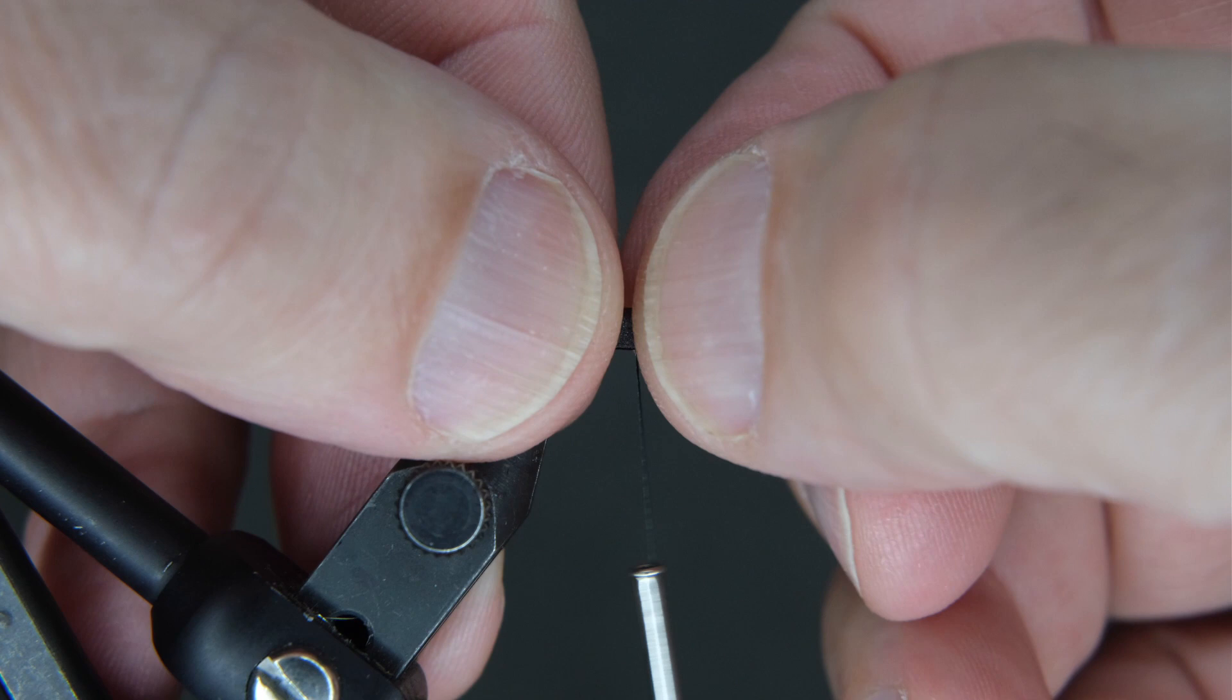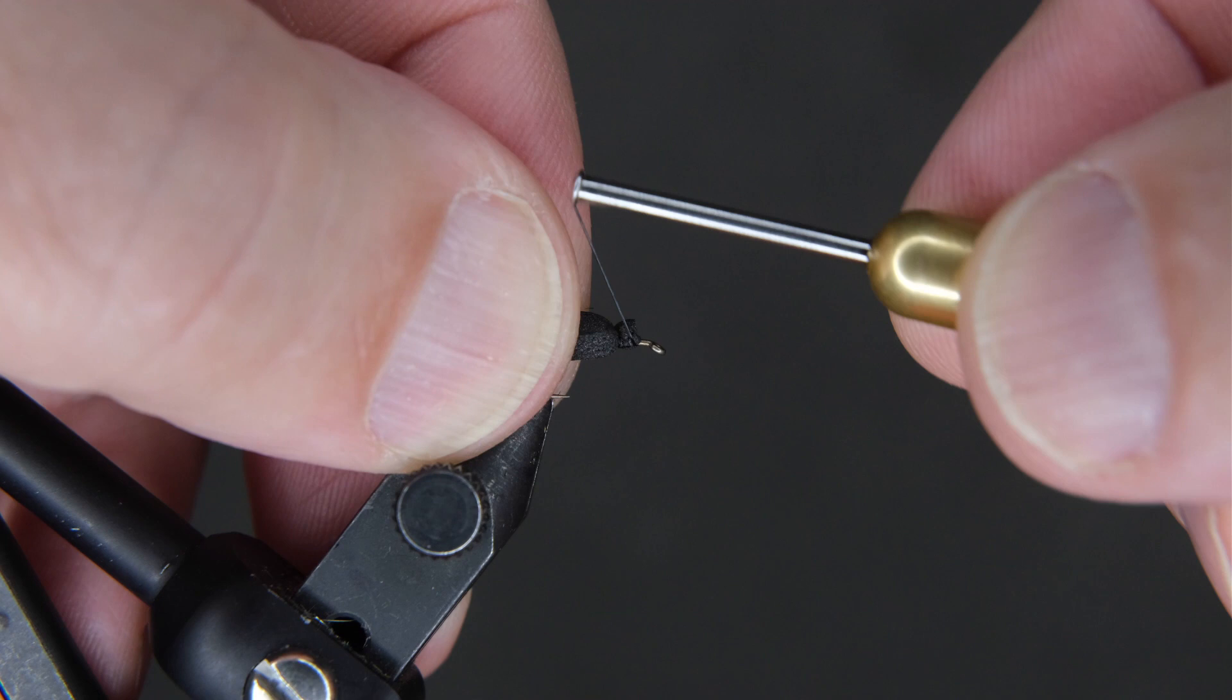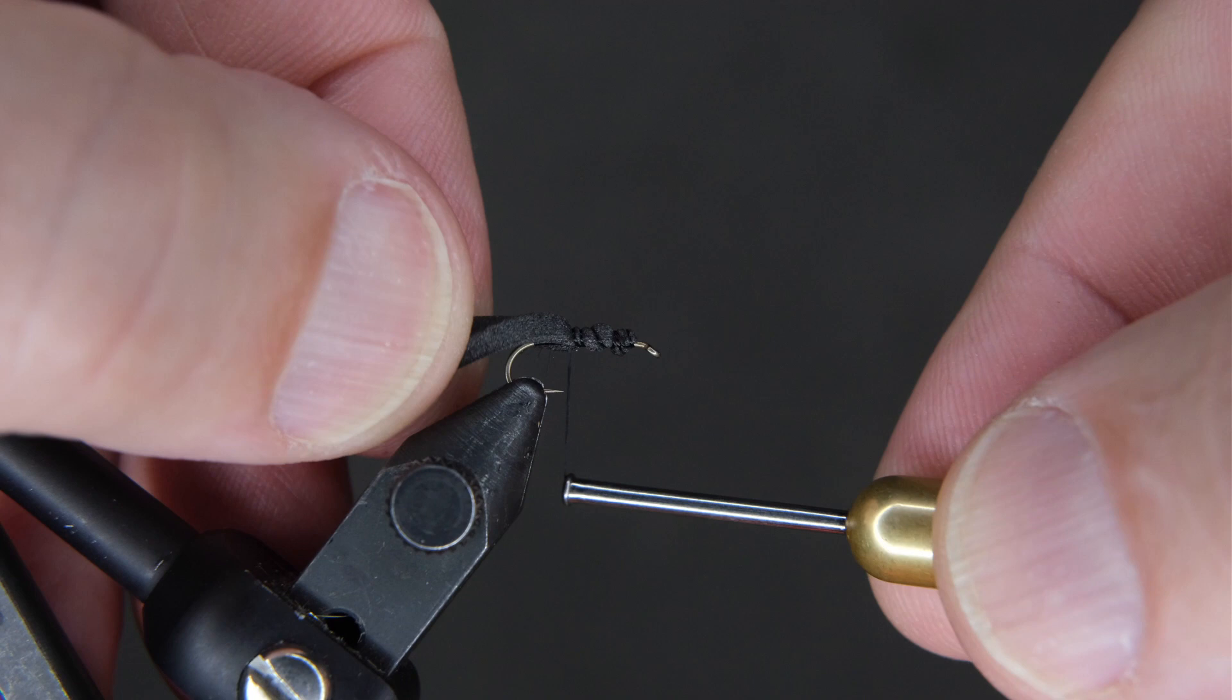It'll help you to secure it in there. You don't want it over the eye, you want it just back right about there. Secure it down. This doesn't have to be pretty, we don't really want tight wraps on it. We're going to kind of loose wrap it all the way to the back.